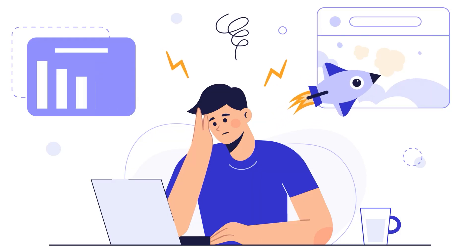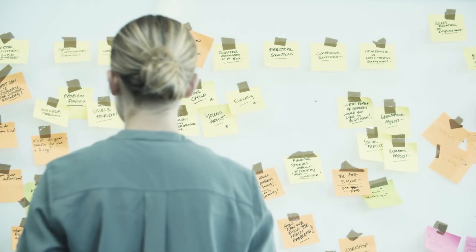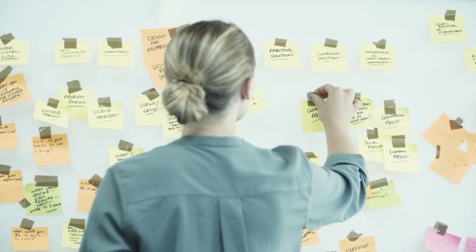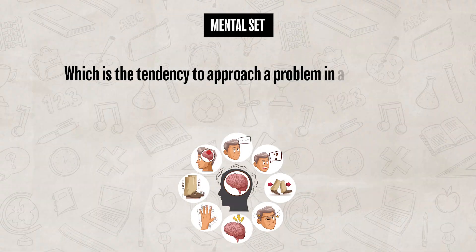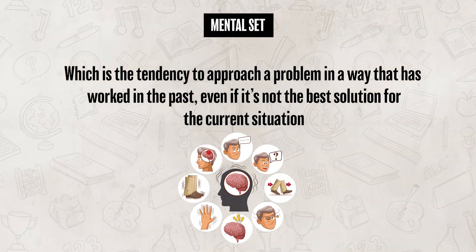When we make decisions, our past experiences and the way a situation is presented end up influencing what we decide to do. Sometimes we get stuck in our ways — we come across a problem that seems familiar and keep trying to solve it the same way we did in the past. One reason we can struggle with problem solving is due to a mental set, which is the tendency to approach a problem in a way that worked in the past, even if it's not the best solution for the current situation. While this can be helpful, it can also limit our ability to find better or more efficient solutions.